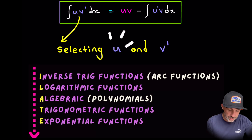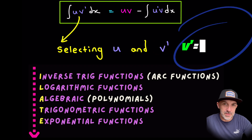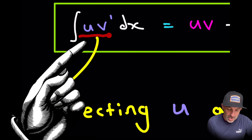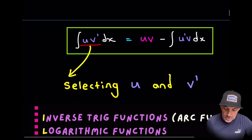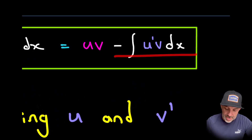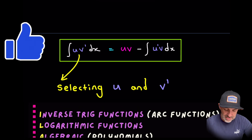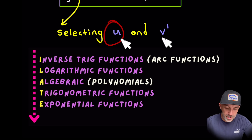We're going to select u and v prime in the following questions. Don't forget v prime is dv by dx. When we integrate u times v prime, we will get uv minus the integral of du/dx times v. When we do the examples, you'll see it all comes out quite nicely. The most important thing is how are we going to select what u and v prime are.